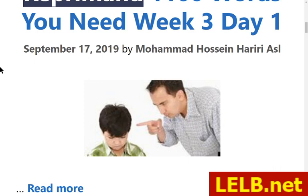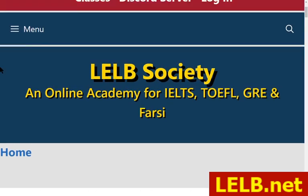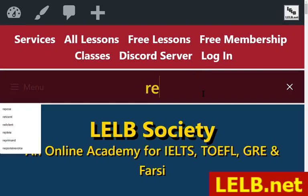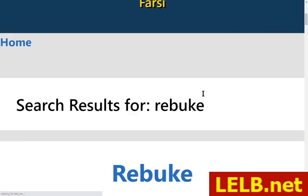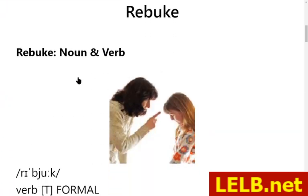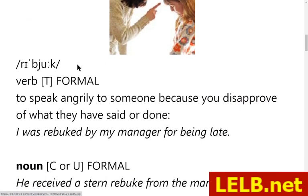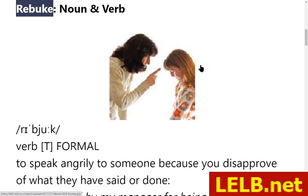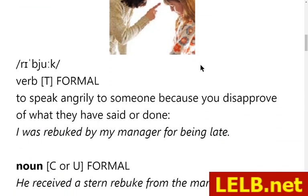The next word is rebuke. Rebuke is both a noun and a verb. It means to speak angrily to someone because you disapprove of what they have said or done — to show strong disapproval. For example, the little girl was rebuked by her mother for talking to strangers without permission, or: I was rebuked by my manager for being late.